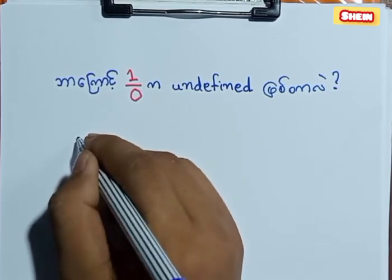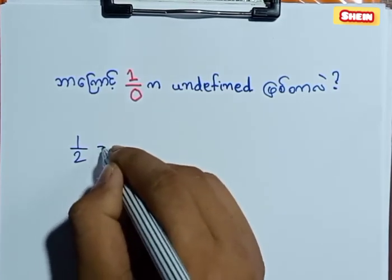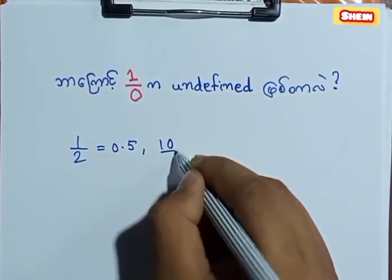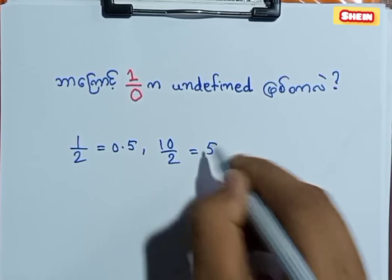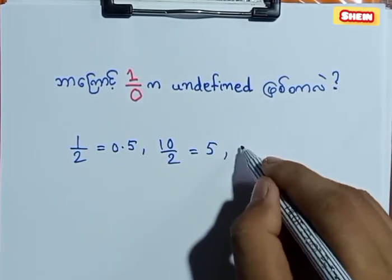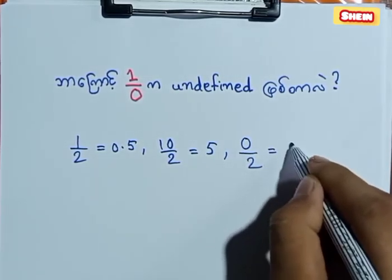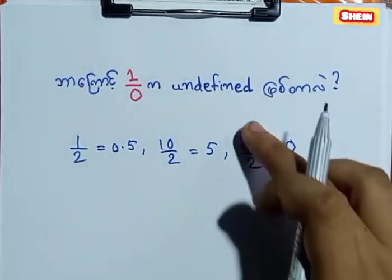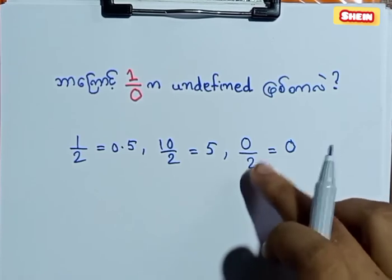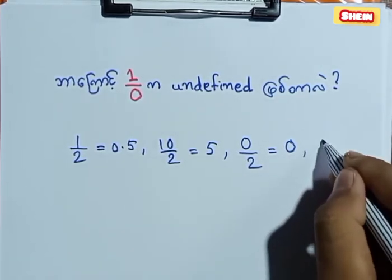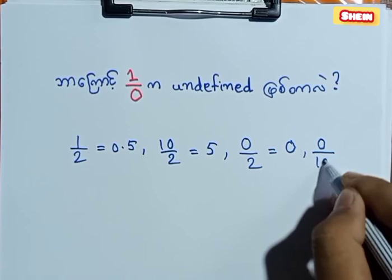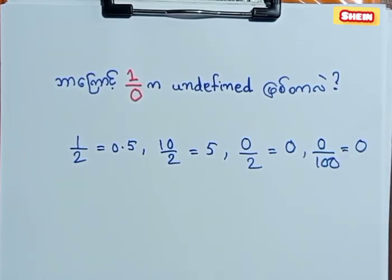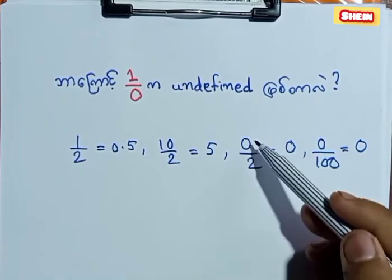1 over 2 is equal to 0.5. 10 over 2 is equal to 5. Now 0 over 2 is equal to 0. 0 is equal to 0.